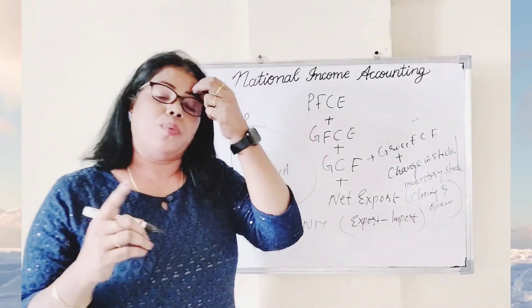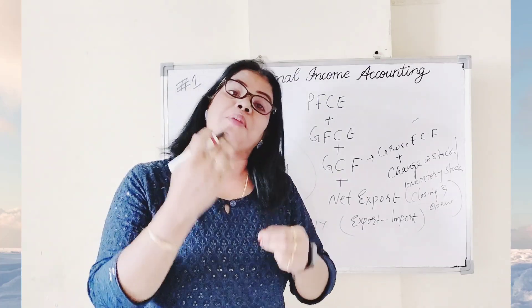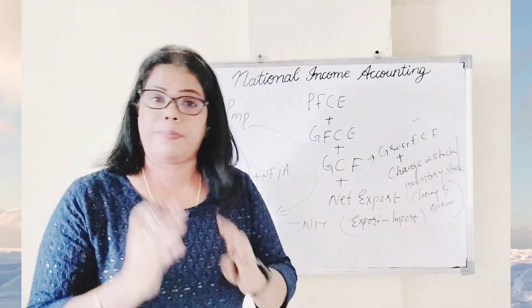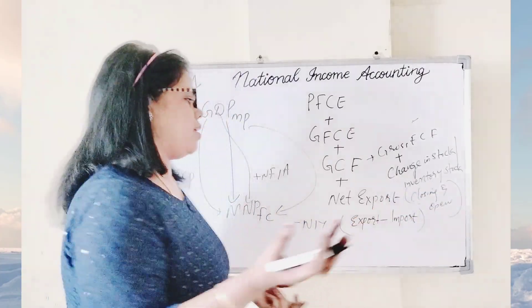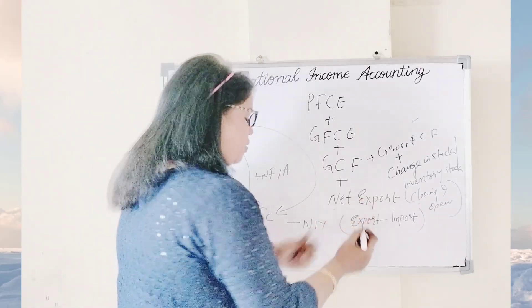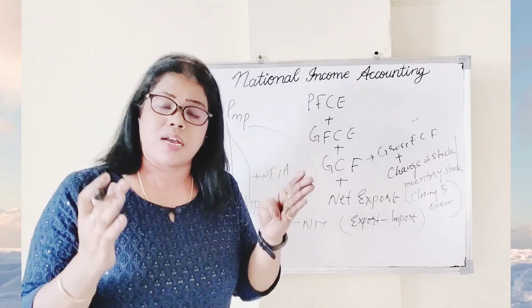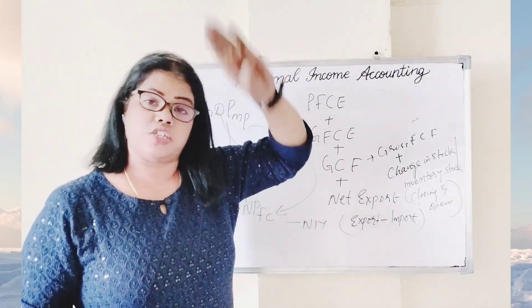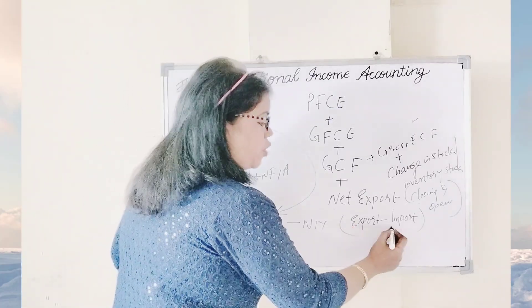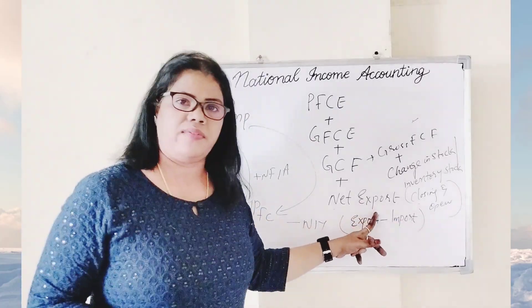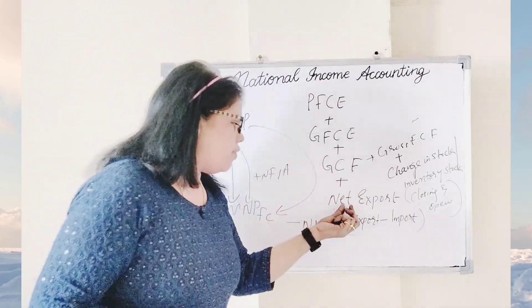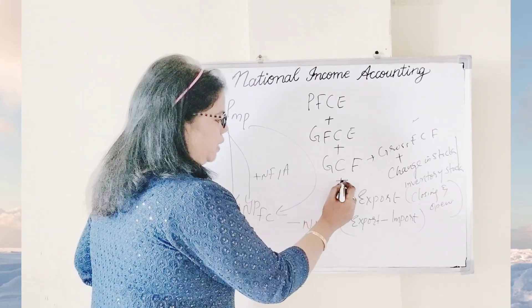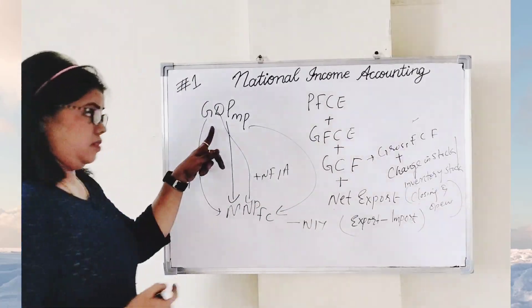Closing stock minus opening stock. Be careful — do not do opening stock minus closing stock; it must be closing stock minus opening stock. Then add with net export. Net export means goods and services exported from our country minus goods imported into our country. If net export is directly given, add it with the other components. If not, find the difference between export and import and add it. You will get GDP at MP.